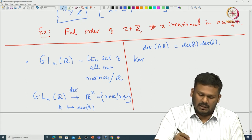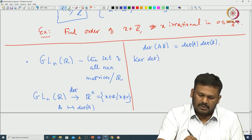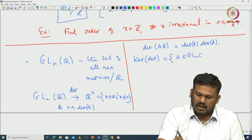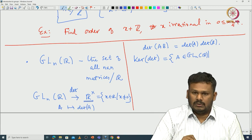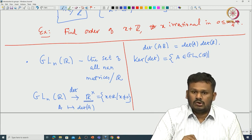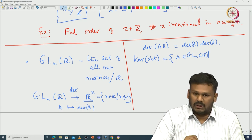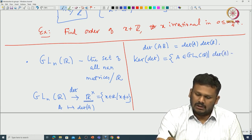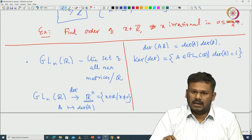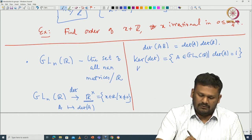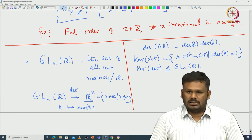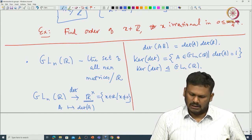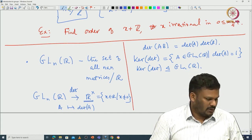The determinant map — usually denoted det — has as its kernel those matrices in GL_n(R) with det(A) = 1 (since 1 is the identity in R×). Those are all the elements forming the kernel. The kernel is nothing but the normal subgroup of GL_n(R), and it is a very interesting subgroup — this is SL_n(R).